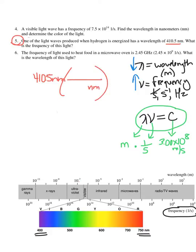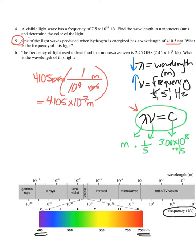I've got to take that 410.5 nanometers and convert that out into meters. I want nanometers on the bottom to cancel and meters on top to be left. There's 10 to the 9th nanometers in one meter — or maybe you know it as there's 10 to the negative 9th meters in one nanometer. Either way, I end up getting that this is the same as 4.105 times 10 to the negative 7th meters. Now I can plug into that equation.